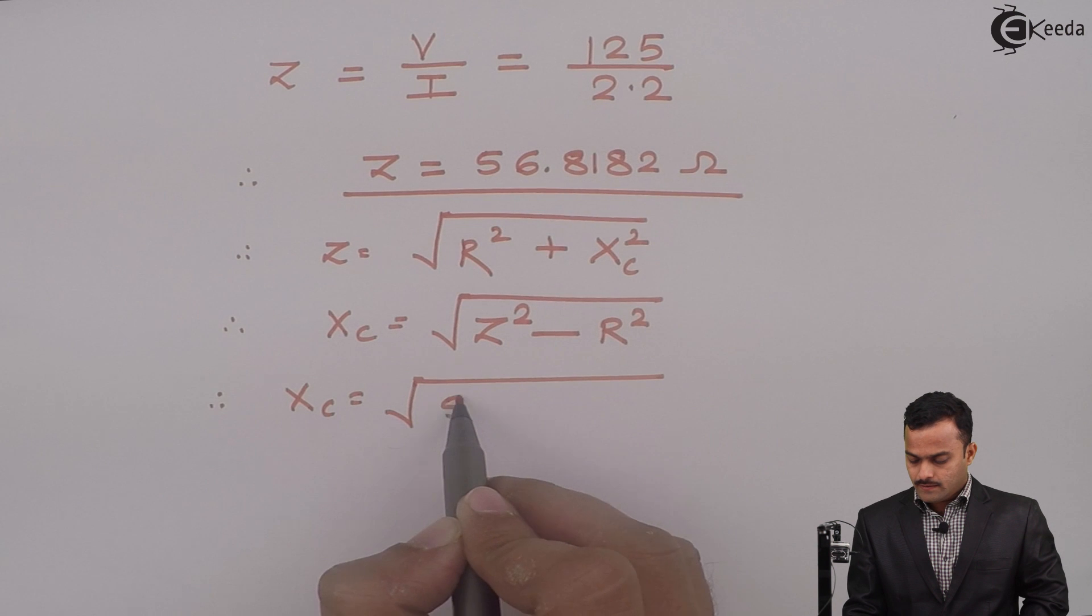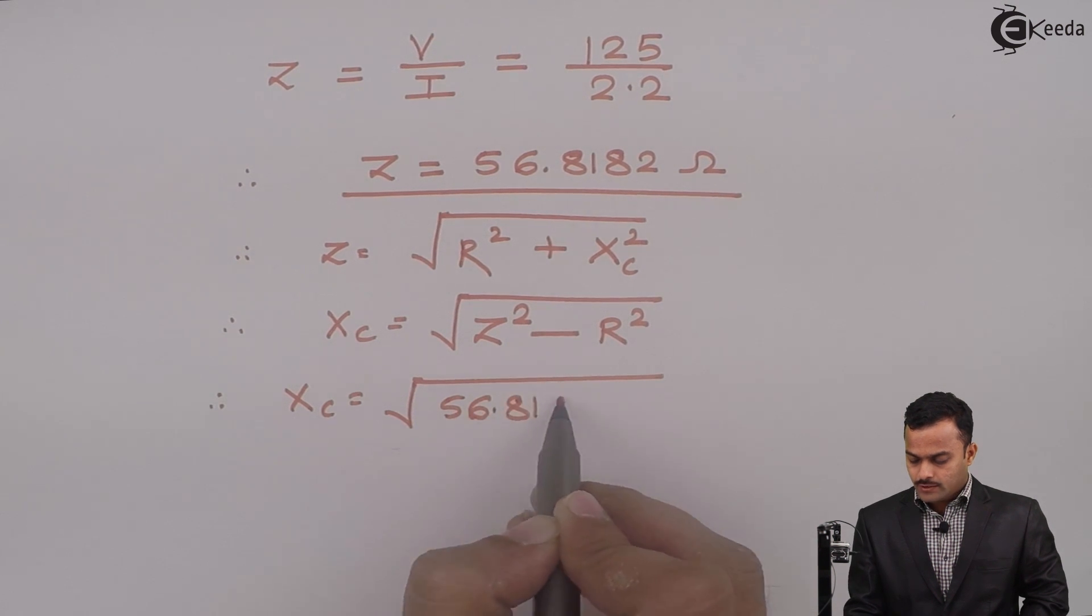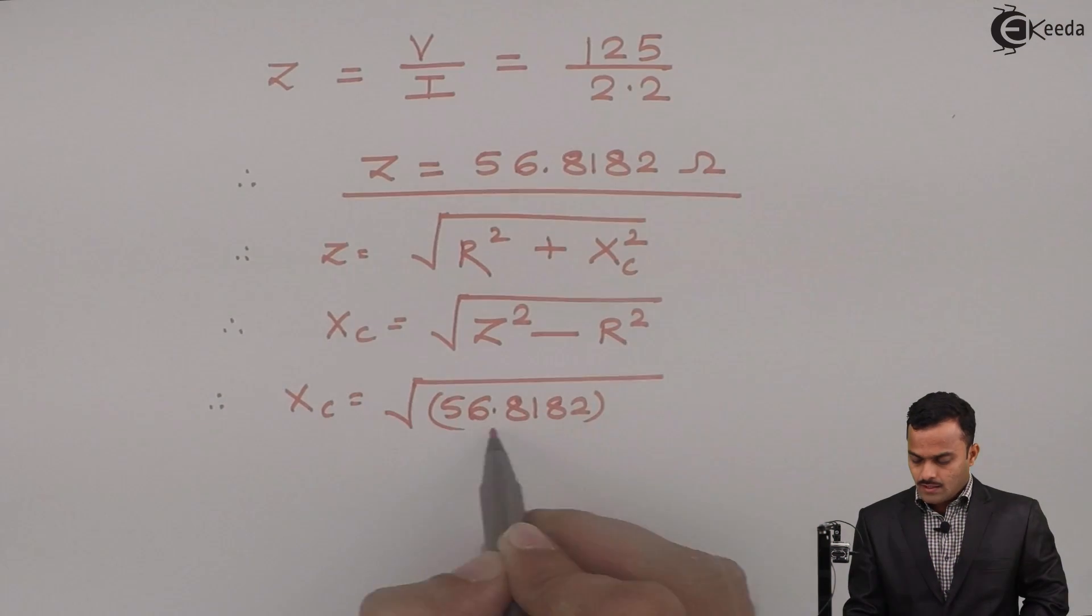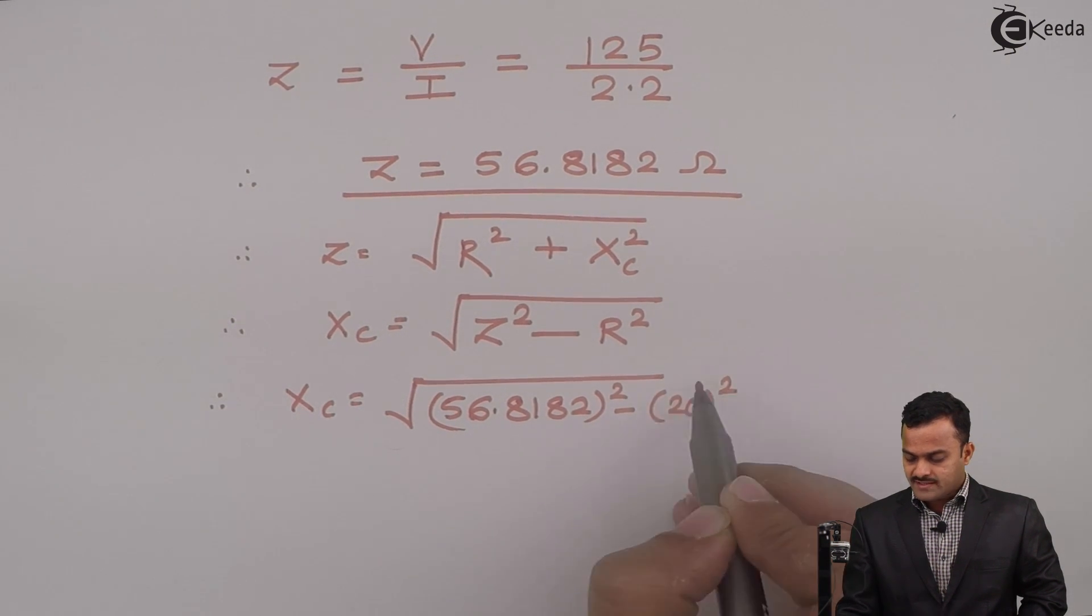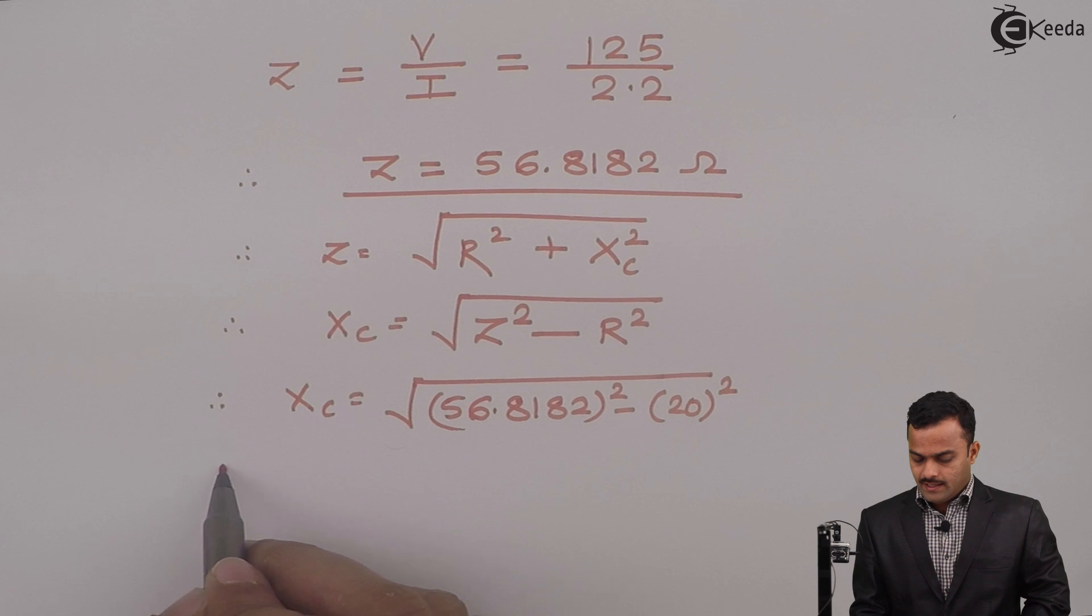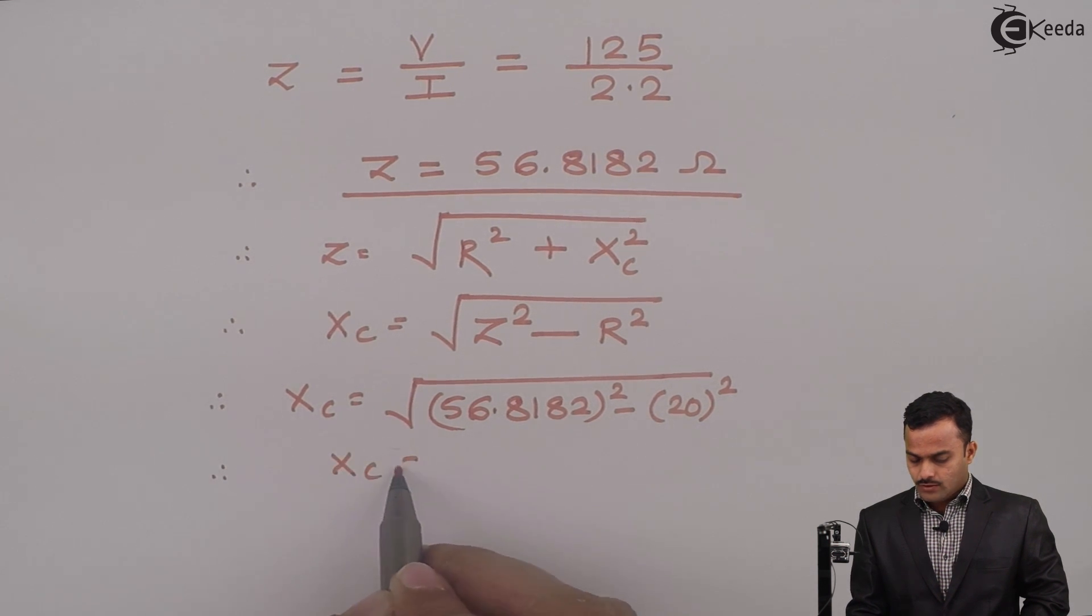Z is 56.8182 and R is 20. So if I substitute the value, I will get XC equal to 53.1818 ohm.